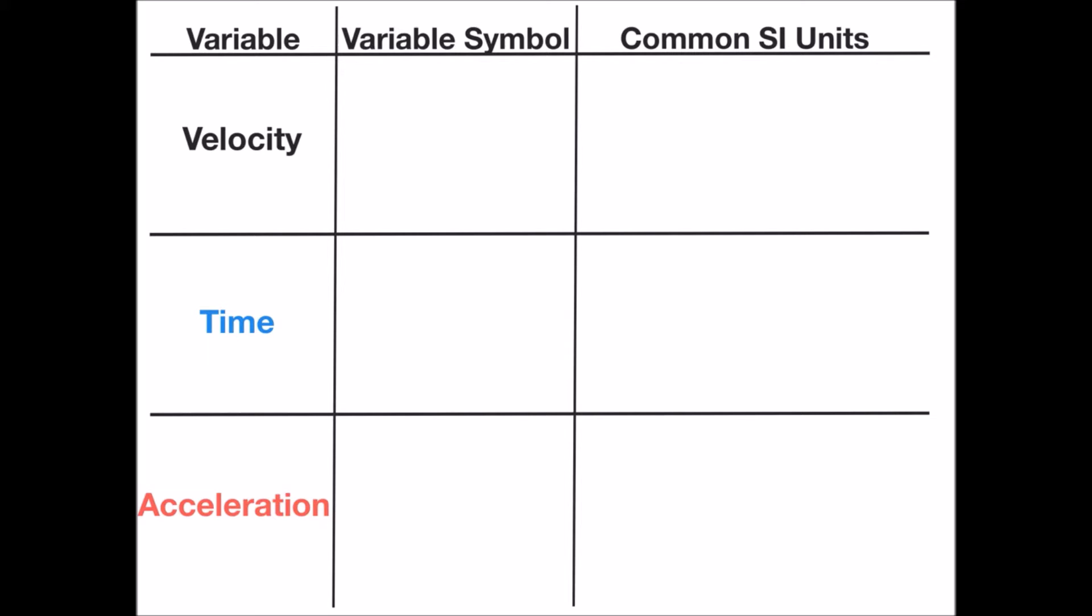Velocity is the speed of an object with an indicated direction. We represent this with the symbol delta v, which means change in velocity.